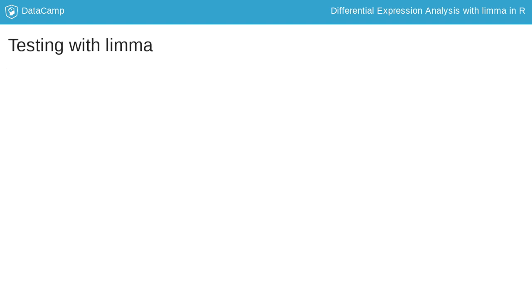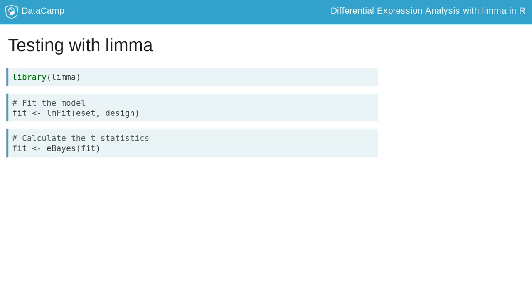Now that you have specified a design matrix, you can proceed with the standard limma pipeline. First, load the package. Second, fit the coefficients of the model with lmFit by passing it the expression set object and design matrix. Third, calculate the T statistics by passing the fitted model object to the eBayes function.